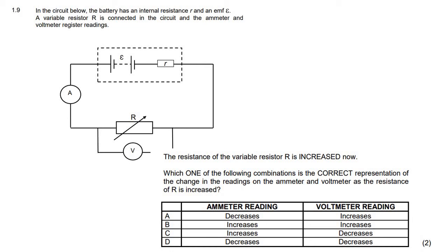Here we have a circuit, and they tell us that we have an internal resistance R and an EMF. The resistance of the variable resistor is increased, so they're going to increase this resistance. Let's try to figure out what happens.